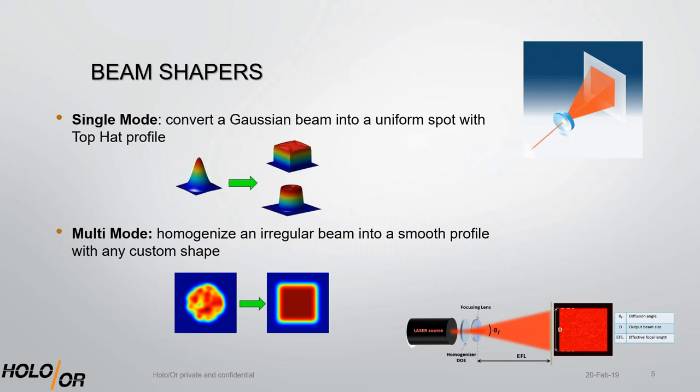HoloOr also carries two different lines of beam shaping DOE for both single and multi-mode systems. For single-mode systems, the DOE converts an input Gaussian beam into a uniform spot with a top hat profile. For multi-mode systems, a homogenizer DOE is used to transform an irregular beam into a smooth profile of any custom shape.